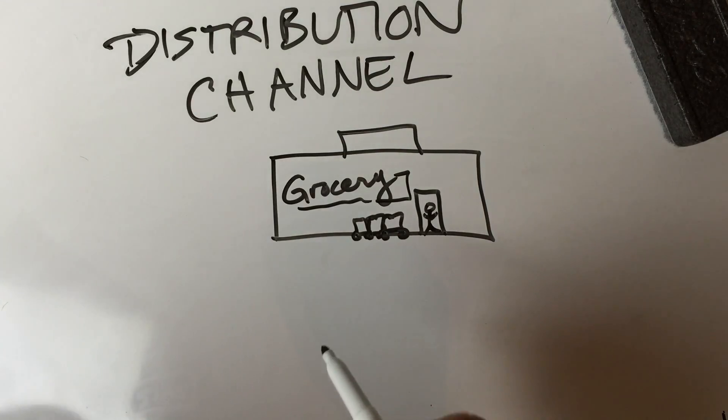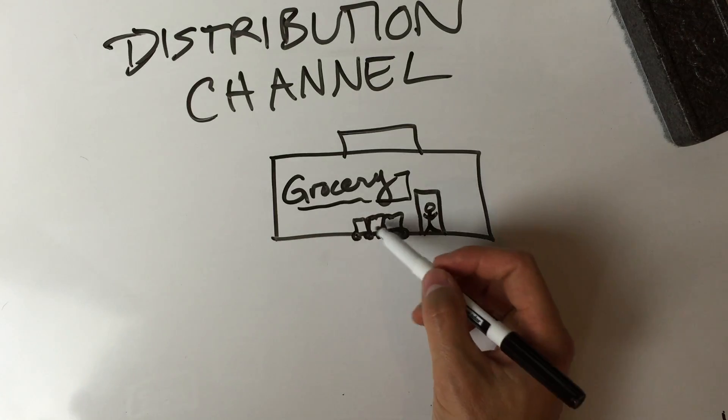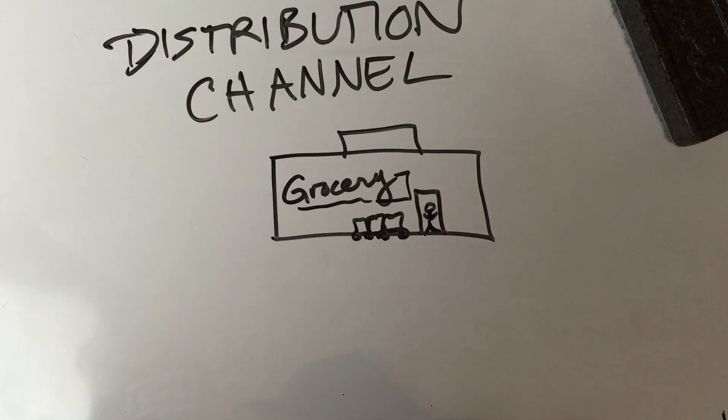Grocery stores are a distribution channel for lots of different foods and they're a distribution channel because they distribute the products. They don't necessarily make the products.